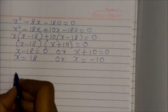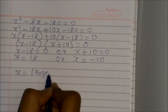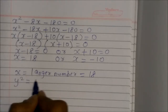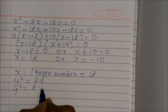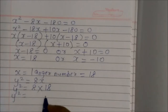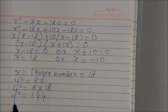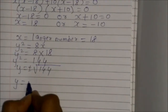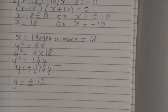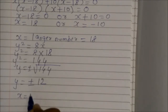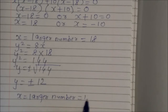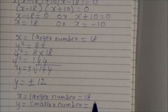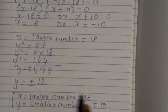Therefore x equals 18 or x equals minus 10. Since x is the larger number, the larger number is 18. Now using equation 2, y² equals 8x equals 8 times 18 equals 144. So y equals root 144, which gives y equals plus or minus 12. Therefore the larger number x is 18 and the smaller number y is plus or minus 12. This is the answer.